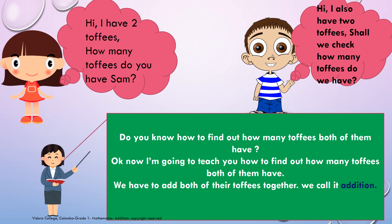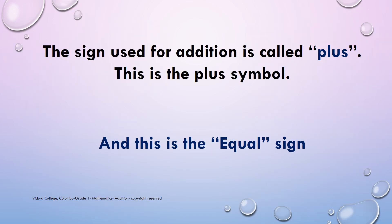We have Sam and Dina here. Let's see what they want to tell us. Dina says: 'Hi, I have 2 toffees. How many toffees do you have, Sam?' Sam says: 'Hi, I also have 2 toffees. Shall we check how many toffees we have together?' Now I am going to teach you how to find out how many toffees both of them have. We have to add both of their toffees together. We call it Addition. So we add the toffees that Sam and Dina had, and we have a basic idea about Addition now.